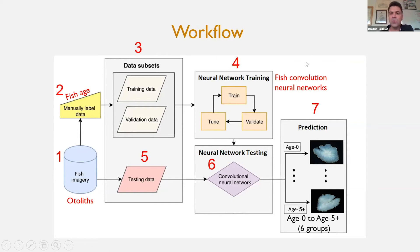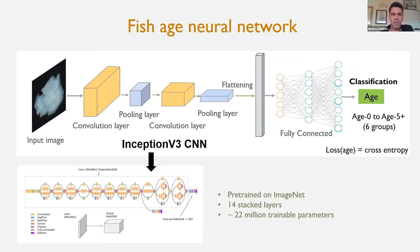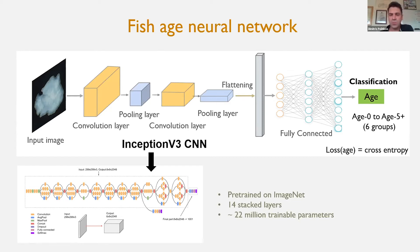We use two networks. The first is the standard network where the input image is passed through Inception V3 — a state-of-the-art CNN — followed by a fully connected layer and a classification output for age. We use categorical cross-entropy as the loss function. Inception V3 has been pre-trained on ImageNet with 1,000 classes and includes almost 22 million trainable parameters.